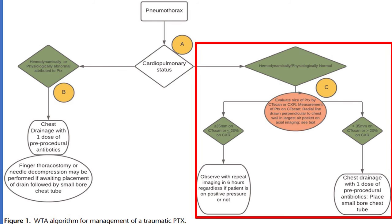If the patient is stable, then the size of the pneumothorax determines treatment. If the pneumothorax is greater than 35mm or greater than 20% on chest x-ray — some correlate this with greater than 2cm from the chest wall — then they recommend treatment with a small-bore chest tube. If the pneumothorax is less than 35mm or 20% volume, then it is safe to observe, recognizing that approximately 10% of these patients will fail observation. The presence of positive pressure ventilation does not affect the management.